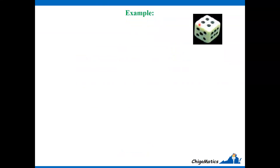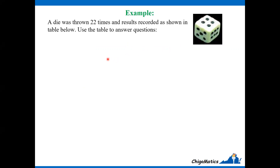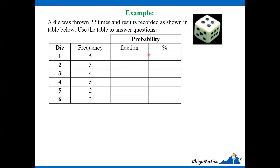Now let us look at an example involving a die. A die has six sides numbered 1 to 6, where dots represent numbers. A die was thrown 22 times and the results recorded as shown in a table. Use the table to answer the questions. Understanding the table: the first column represents the die numbers 1 through 6, and the second column represents the frequency.